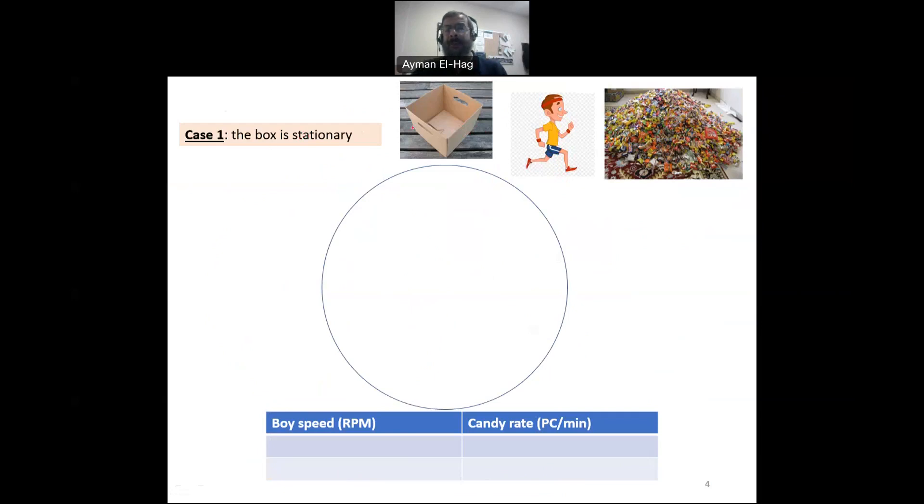We'll start with the first case, which is the box is stationary. The box doesn't move while the man is running around this circle. That is exactly the case when you hold the rotor and you block it from movement and still you will have the rotating magnetic field. So this person is asked to take one candy at a time, do one revolution here, put the candy in the box. Take the second one and put it in the box and you keep doing this.